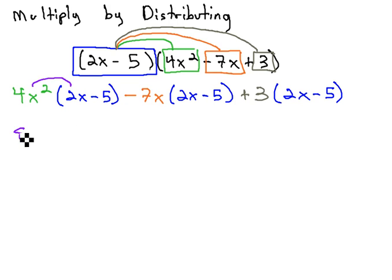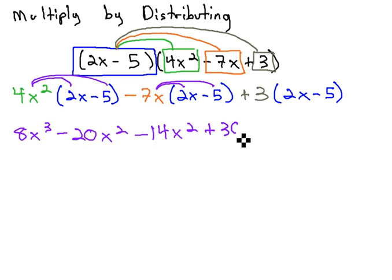4x squared times 2x is 8x cubed. 4x squared times negative 5 is negative 20x squared. Negative 7x times 2x is negative 14x squared. Negative 7x times negative 5 is positive 35x.